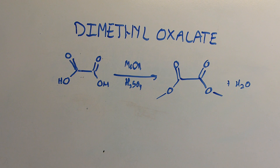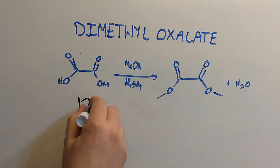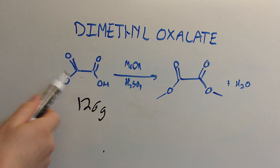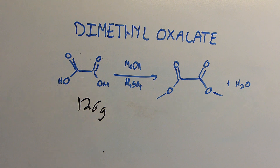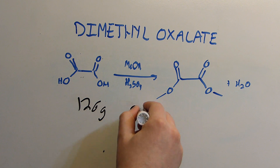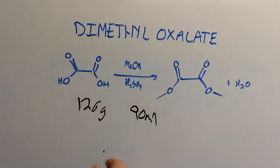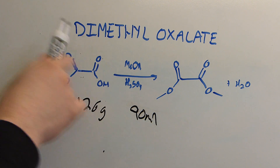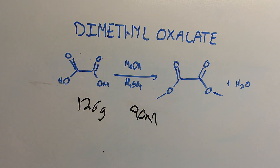I'll be performing this reaction on a 1 molar scale, which means that I'll need 126 grams of oxalic acid. Now this doesn't add up to 126 because commercial oxalic acid is sold as the dihydrate. So 126 grams of oxalic acid dihydrate, and we'll add 90 milliliters of methanol, which is slightly excess of what we need. However, it will help to drive the reaction to completion and prevent any extra oxalic acid from being left in solution, which will help us clean up the products later.